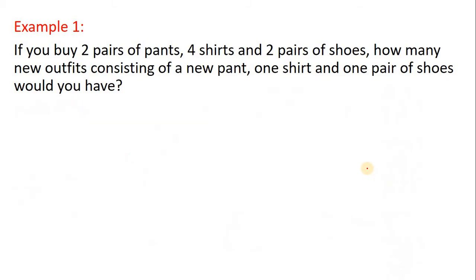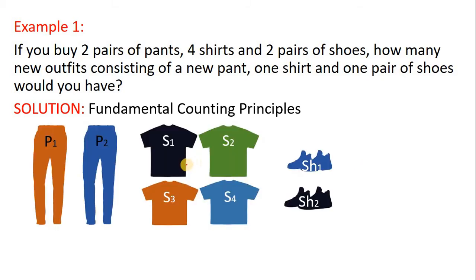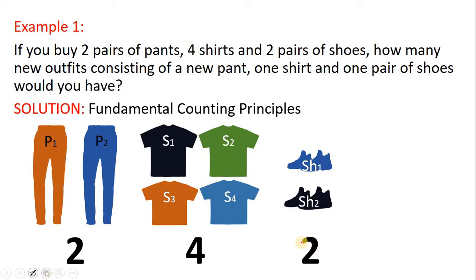The last method is the fundamental counting principle. There are three actions here. Your first action is to choose which pair of pants to use — there are two options. The second action is to choose which shirt to use — you have four options. The third action is to choose which pair of shoes to use — there are two. Multiplying these three actions: two times four times two, you end up with 16.